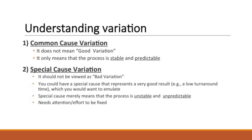For example, a low turnaround time — and you would want to be able to reproduce that process. Special cause merely means that the process is unstable and unpredictable. We need to pay attention to the process to understand what part of it needs to be fixed.